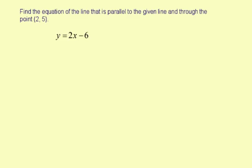Find the equation of the line that is parallel to the given line and through the point 2, 5. Now parallel means they're going to have the same slope.